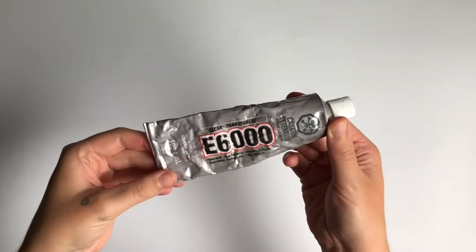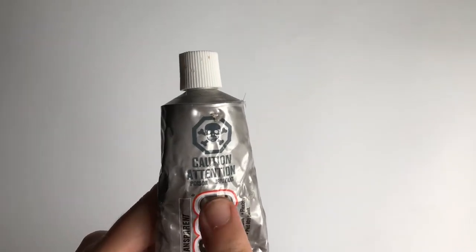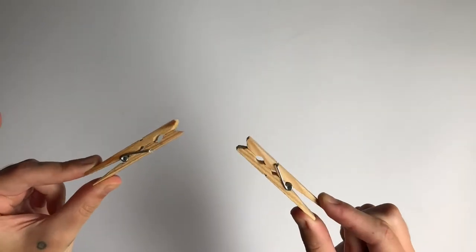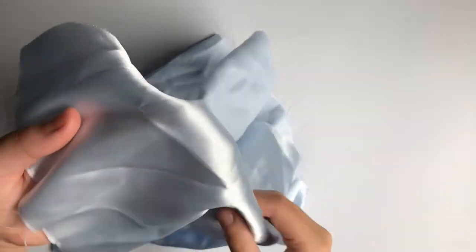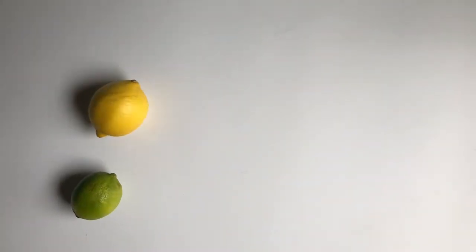I'll be using this E6000 glue. Kind of toxic but does the trick real good. Also going to be using some clothespins, some school glue and paintbrushes and a thick satiny fabric. Throughout the video I will be using various citrus to represent nipples.